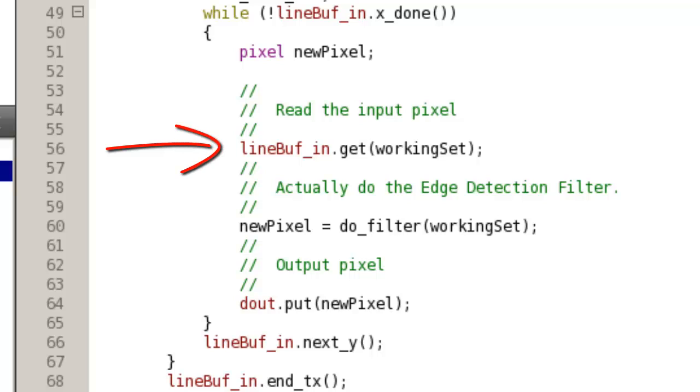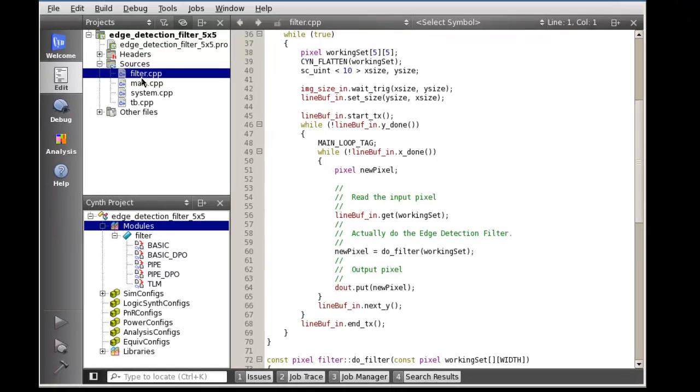The next loop says iterate until all rows are processed. Then iterate until all pixels in a particular row are processed. And now we get to the meat of the interface to the line buffer. We simply ask the line buffer for the next working set, call the doFilter function to calculate a new pixel value, and push that new pixel value to the output port. Very simple. Once we get to the end of a row, we tell the line buffer to switch to the next row, and once all rows are processed, we indicate that we are done with the transaction, i.e. the current image. This would normally be a very complicated process, but due to the fact that an enormous amount of complexity is encapsulated in the line buffer class, the designer's life is dramatically simplified.